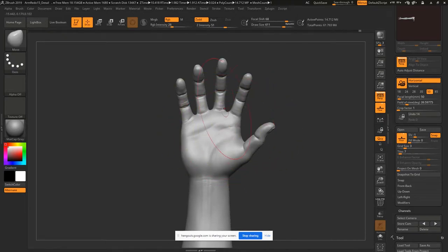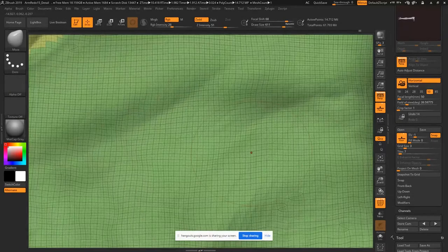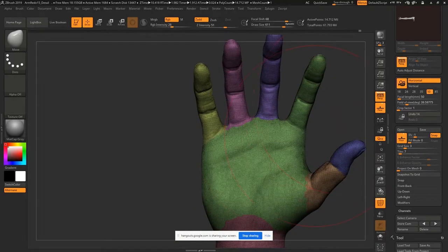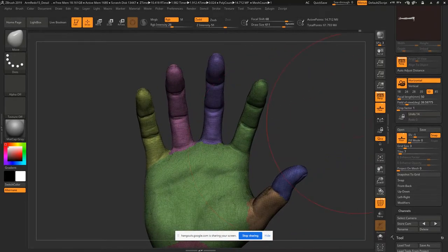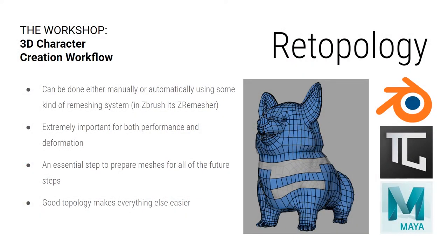After you finish the Sculpting phase, you move on to the Retopology phase, where you're taking an ungodly amount of polygons down to something more reasonable for a game or a movie. After you've defined the form and shape, retopology makes it usable in a practical sense. Some people render straight from a sculpt, but if our aim is to actually animate the character, we have to retopologize it — we need some kind of edge flow that isn't insane.